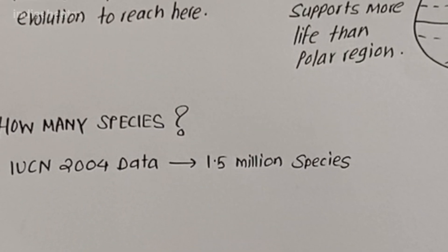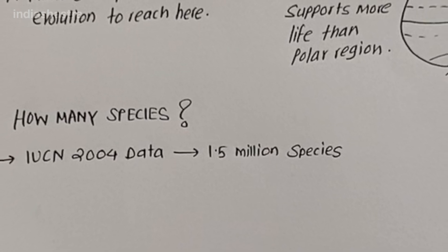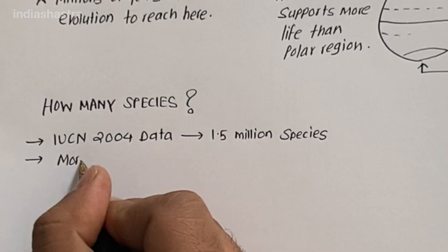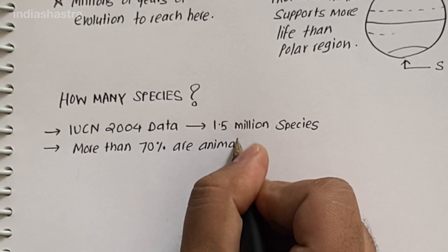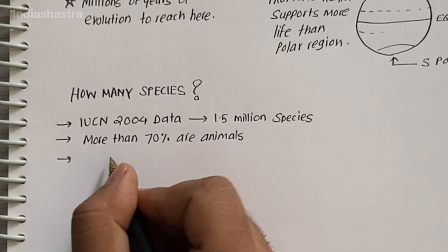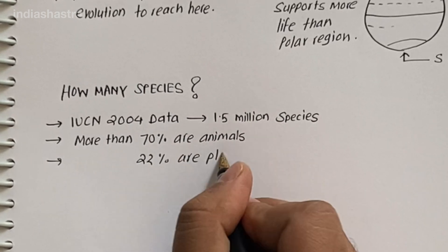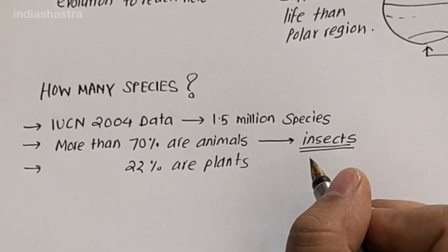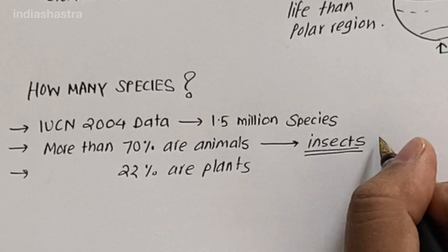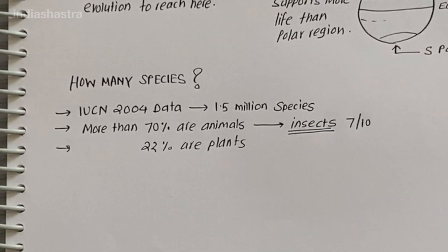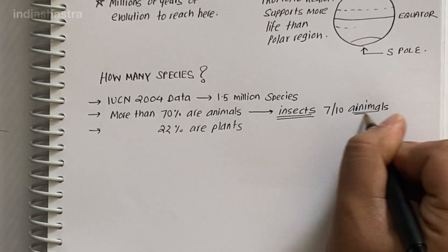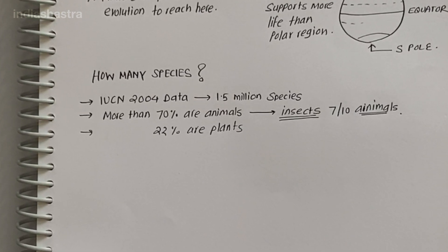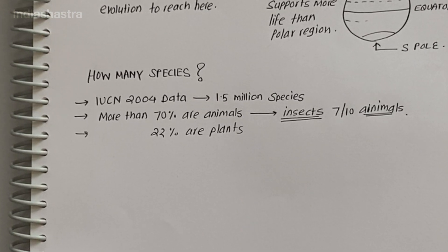But we have no clear idea of how many species are yet to be discovered and described. More than 70% of all the species recorded are animals, while plants including algae, fungi, bryophytes, gymnosperms, and angiosperms comprise no more than 22% of the total. Among animals, insects are the most species-rich taxonomic group, making more than 70% of the total. That means out of every 10 animals on this planet, 7 are insects.